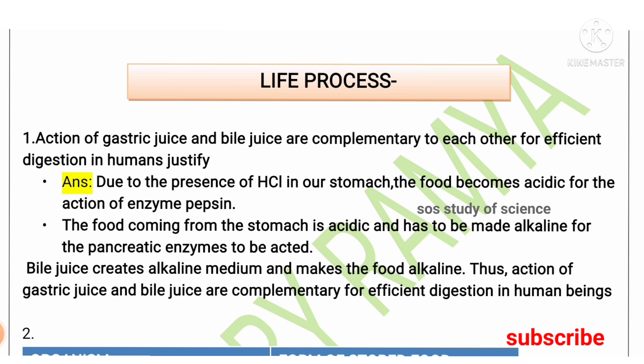Once the food is semi-digested in the stomach, it enters into the small intestine. When entering the small intestine, the food is in an acidic medium and it has to be converted into alkaline medium. Bile juice plays a very important role in converting the food to alkaline medium so that pancreatic enzymes can act. So the action of gastric juice and bile juice are both complementary for efficient digestion in human beings.